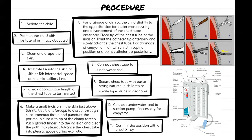Make a small incision in the skin just above the fifth rib. Use blunt forceps to dissect through the subcutaneous tissue and puncture the parietal pleura with the tip of the clamp forceps. Put a gloved finger into the incision and clear the path into the pleural space — this may be difficult in a small child. Advance the chest tube into the pleural space during expiration. For drainage of air, roll the child slightly to the opposite side for easier maneuvering and advancement of the chest tube anteriorly.